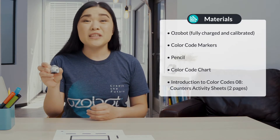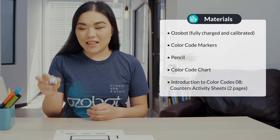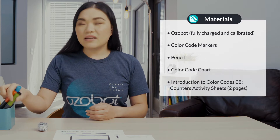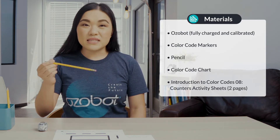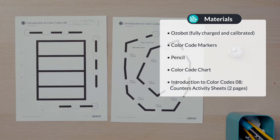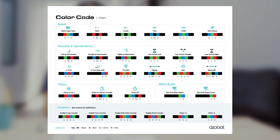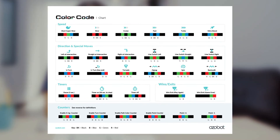For today's lesson you will need an Ozobot, fully charged and calibrated, color code markers, a pencil, both pages of your introduction to color codes lesson 8 counters activity sheets, and a color codes chart.